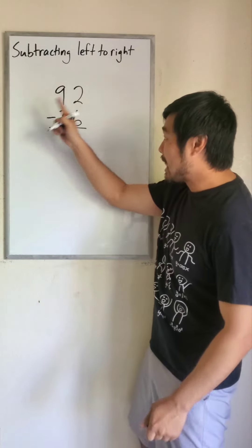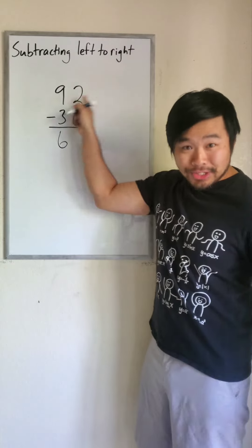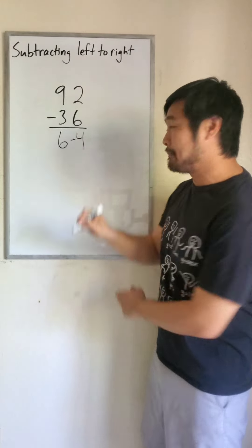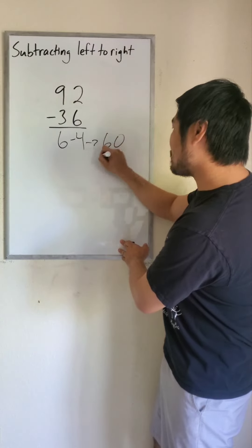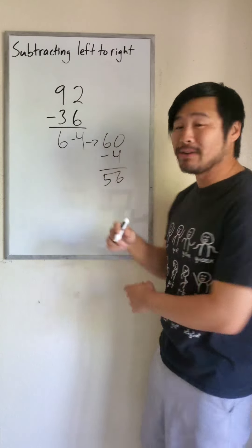For 92 minus 36, 9 minus 3 is 6, 2 minus 6 is negative 4. Now this isn't 6 minus 4, this is 60 minus 4, which is 56.